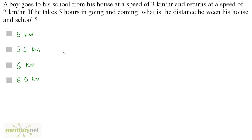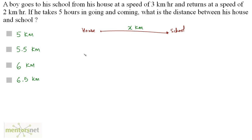A boy goes to his school from his house at a speed of 3 kilometers per hour and returns at a speed of 2 kilometers per hour. If he takes 5 hours in going and coming, what is the distance between his house and the school? Let the distance be x kilometers. The total time t equals the time to go to school plus the time to return, and the total time is 5 hours. The formula for time is distance upon speed.